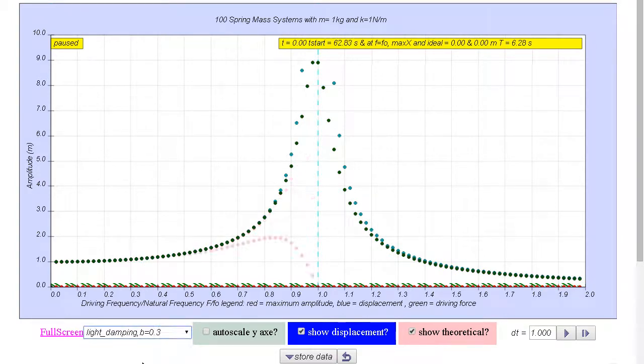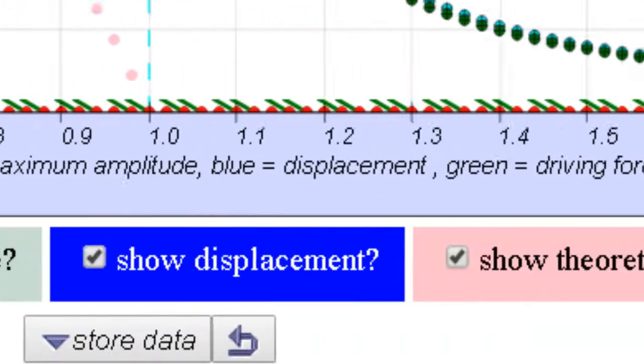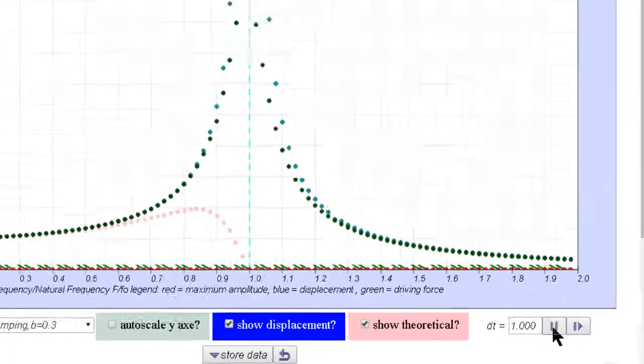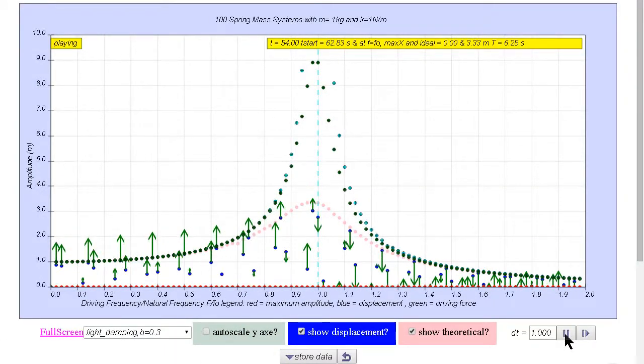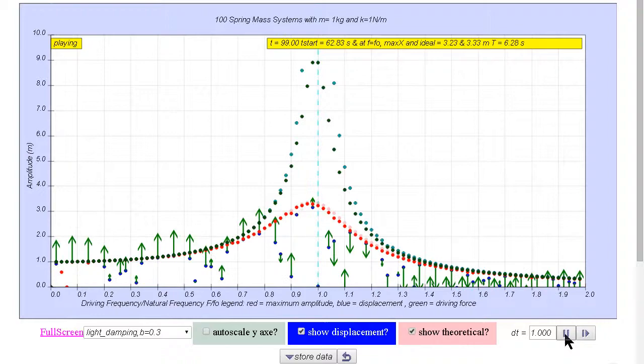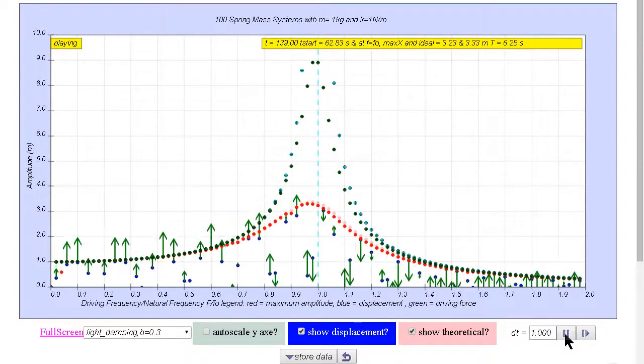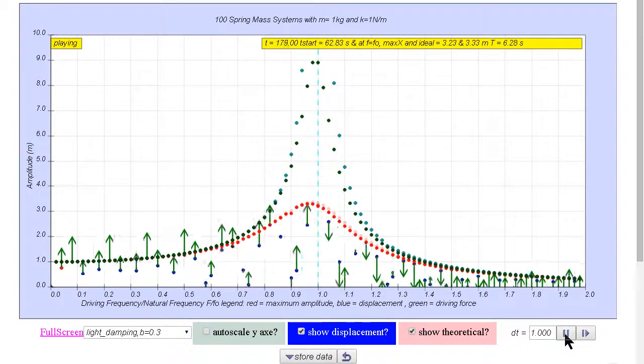Now we can change to a light damping case, and we click play again. Again, the system is being excited by external driving force. And after playing for long enough time, the maximum amplitude which is shown by the red dots starts to appear.